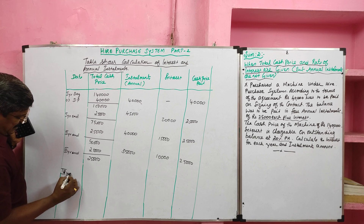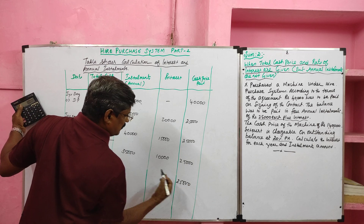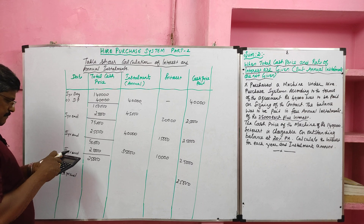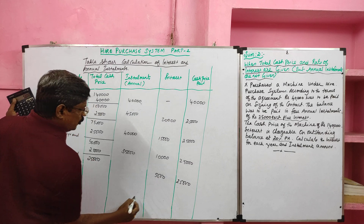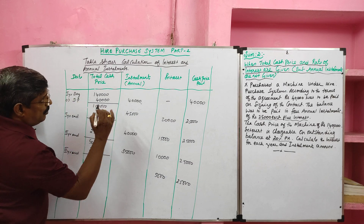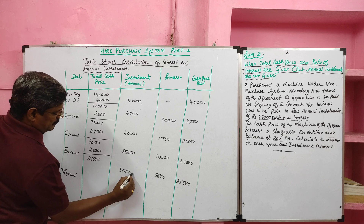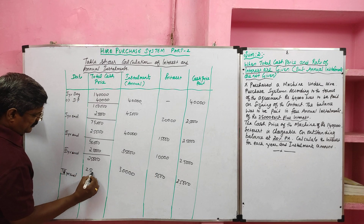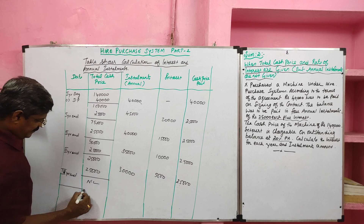At the fourth year end, the last installment: again he paid ₹25,000 plus interest. On ₹25,000 at 20%, interest is ₹5,000. The total payable on the fourth installment is ₹30,000. The annual cash price is deducted from the total cash price, and all cash price has now been paid.